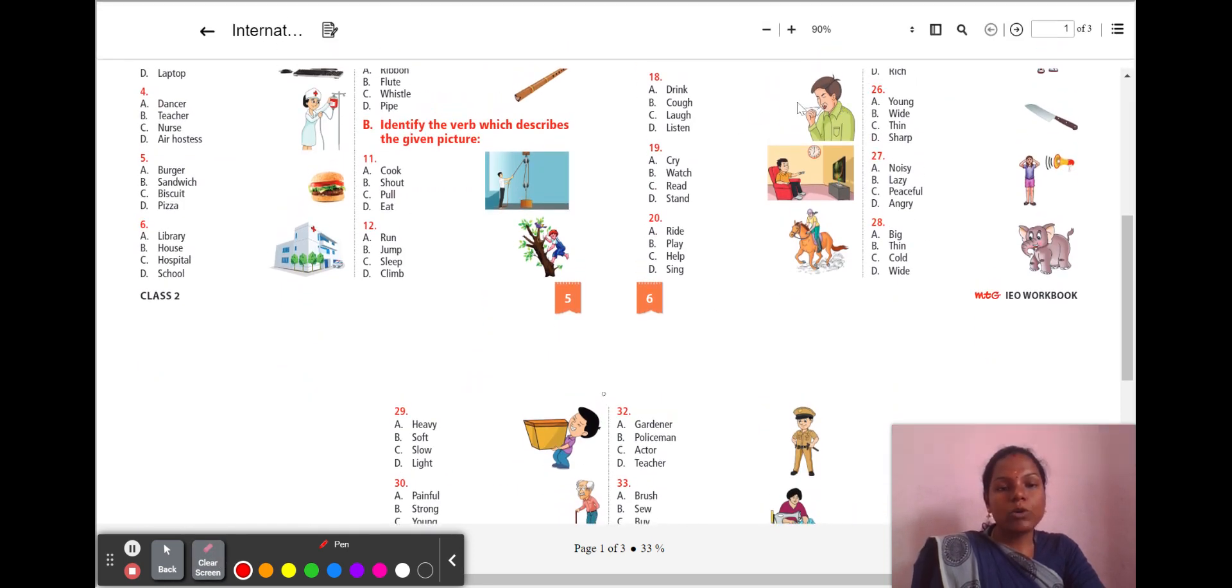18th question. A man over here is coughing severely. So, what is his action? A, drink. B, cough. C, laugh. D, listen. So, the man is coughing here. The answer is B, cough. Next, 19th question. A man sitting over the sofa and what is he doing? Is he crying, watching, reading, standing? Yes, he is watching TV. So, your action is B, watch. Next, 20th question. What is the action of this girl? She is on the horse. What is she doing? Ride, play, help, sing. She is riding the horse. So, the answer is A, ride.